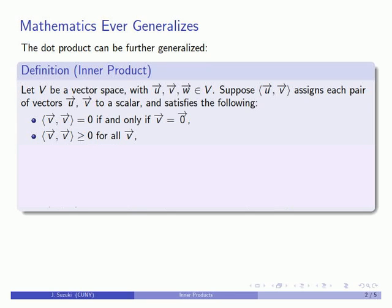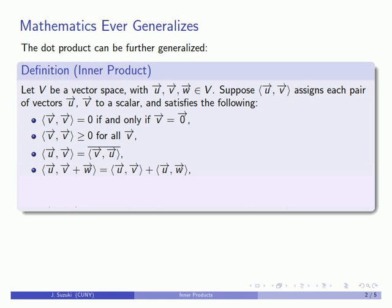Next, if we alter the order in which we take the vectors, then the inner product of u and v is going to be the conjugate of the inner product of v and u. Next, we have a restricted form of additivity: the inner product of u with the sum of two vectors is the same as the inner product of u with the first vector plus the inner product of u with the second vector.